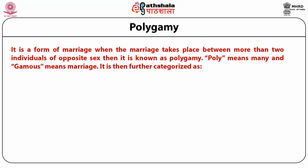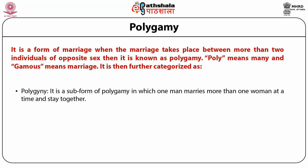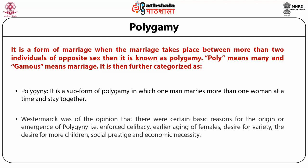Polygamy — poly means many and gamos means marriage. It is further categorized into polygyny, which is a sub-form of polygamy in which one man marries more than one woman at a time and they stay together. Westermarck was of the opinion that there were certain basic reasons for the origin of polygyny: enforced celibacy, earlier aging of females, desire for variety, the desire for more children, social prestige, and economic necessity.